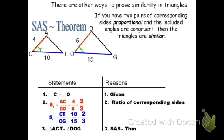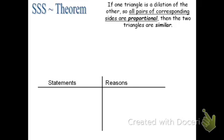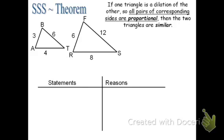Now let's look at the third and last method: SSS Similarity Theorem. For SSS Similarity Theorem, you need all pairs of corresponding sides to be proportional. If all pairs of corresponding sides are proportional, then the two triangles are similar. Let's look at an example with triangle BAT and triangle FRS, where we have all three sets of sides for both triangles.